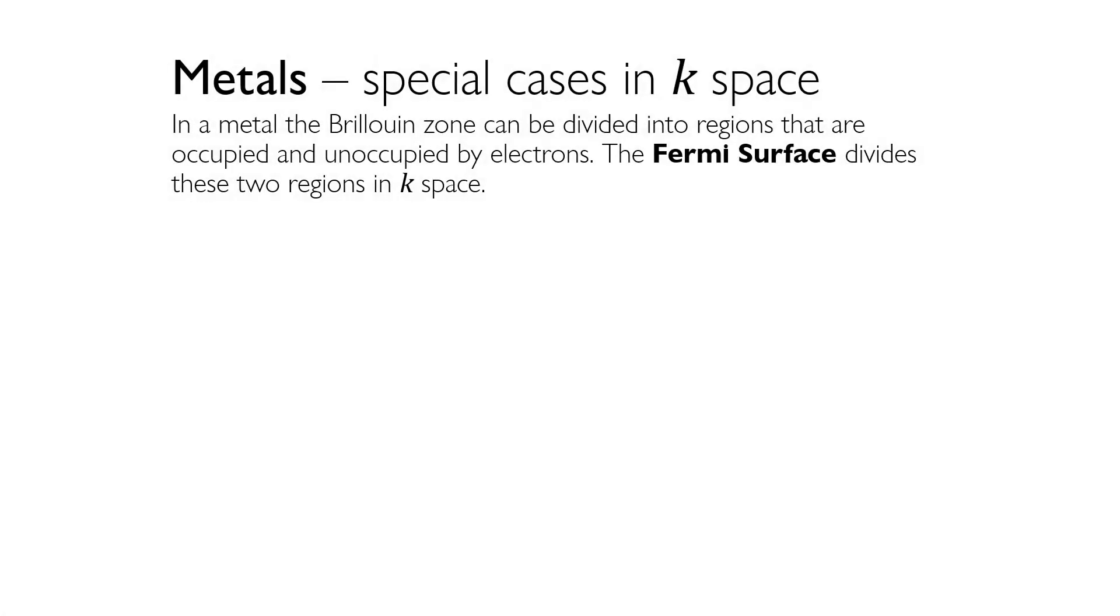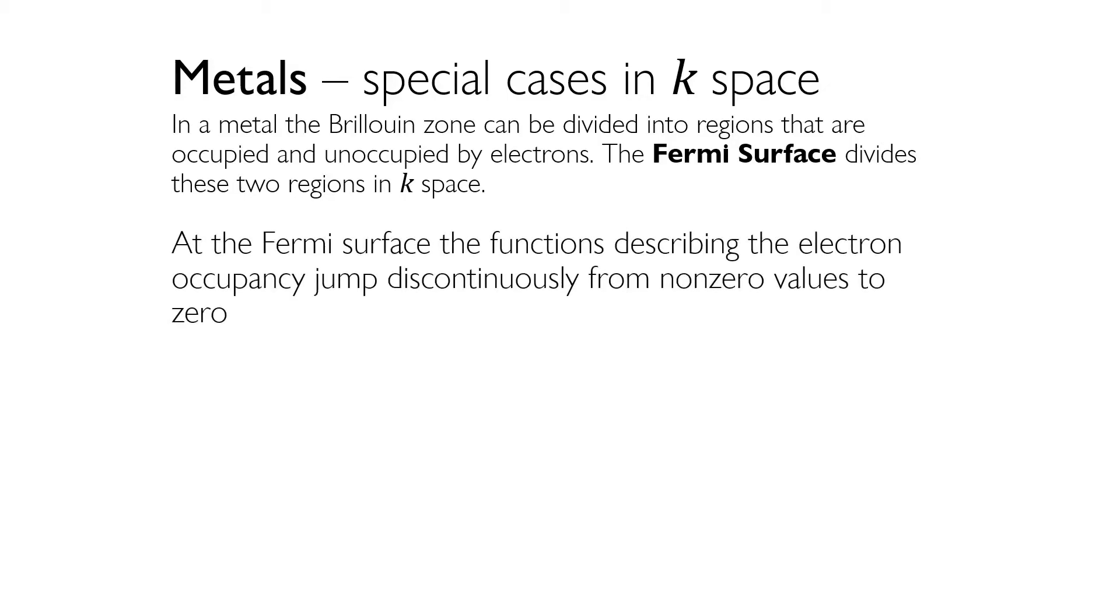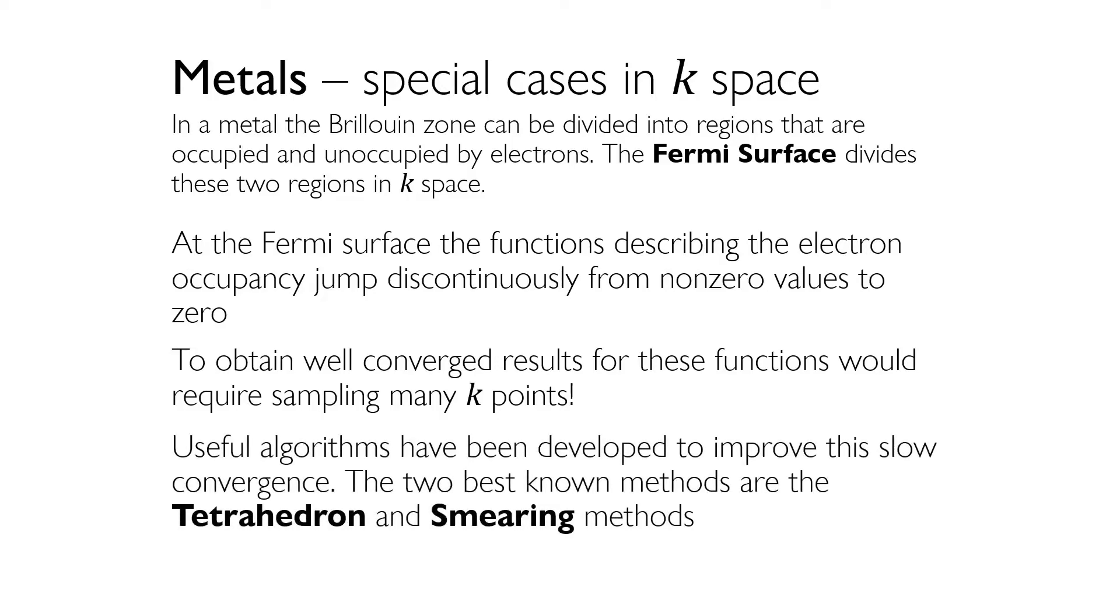While we're on the topic of numerically approximating integrals, it's worth mentioning that these approximations converge rapidly to the exact result of the integral when the integrands are continuous functions. Unfortunately, this useful property isn't always available in the k-space integrals of DFT calculations. An especially important example of this is the case of metals. In a metal, the Brillouin zone can be divided into regions that are occupied and unoccupied by electrons. The surface in k-space that divides these two regions is called the Fermi surface. This is important when it comes to solving integrals in k-space, because the functions being integrated change discontinuously from non-zero values to zero at the Fermi surface. As a result, if no special action is taken, it would require sampling a very large number of k-points if you wanted to obtain well-converged results. As metals are a rather important subset of all materials, a number of algorithms have been developed to address this problem of slow convergence. The two best known methods are the tetrahedron and smearing methods.